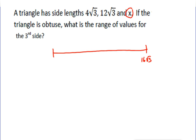The smallest it can go down to is right above 8√3 because 4√3 plus 8√3 is just equal to 12√3, so we'd need something bigger.